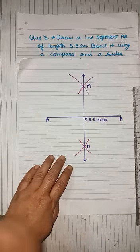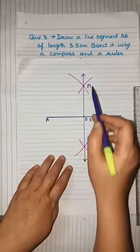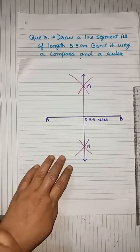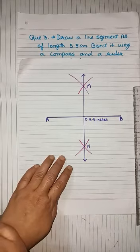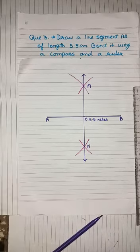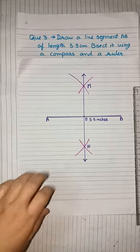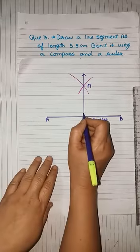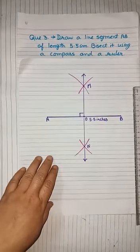Now students, if you measure the angle MOA or angle MOB with the help of a protractor, then its measure comes as 90 degrees. Therefore you have to put a 90 degree angle here.